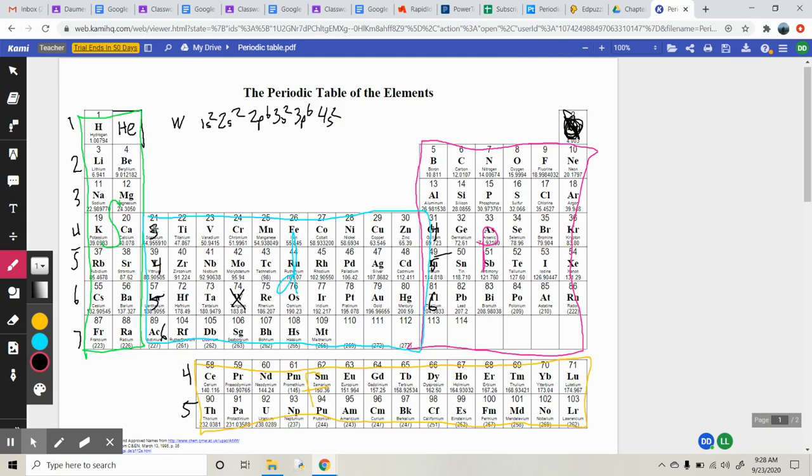And remember, we get here, so now it's 3D10, 4P6, 5S2. 4D10, 5P6, 6S2, and now this is where we get to our lanthanide series. So 6S2, and remember, we hop back down here to 4F14 to get through that whole shindig.